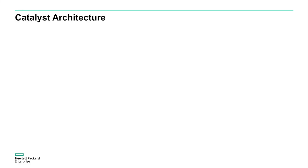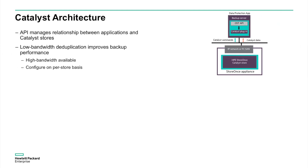Now let's take a look at the architecture that makes up the Catalyst protocol. The centerpiece for Catalyst functionality is the Catalyst API. It acts as a translator between data protection app commands and Catalyst commands to allow the app to configure, schedule, and run jobs to Catalyst stores. By default, Catalyst uses low-bandwidth deduplication, which has a good portion of the deduplication process take place on the backup server. This reduces the network bandwidth required to complete a backup job, as only unique chunks of backup data need to be sent from the backup server to StoreOnce.